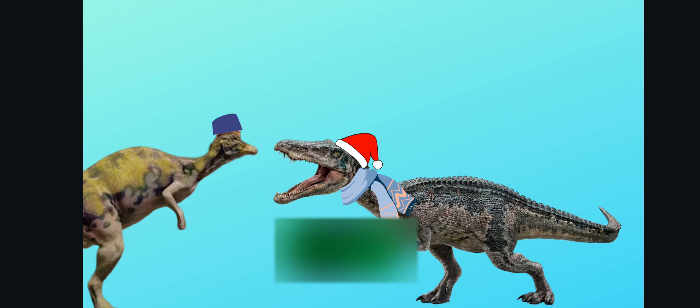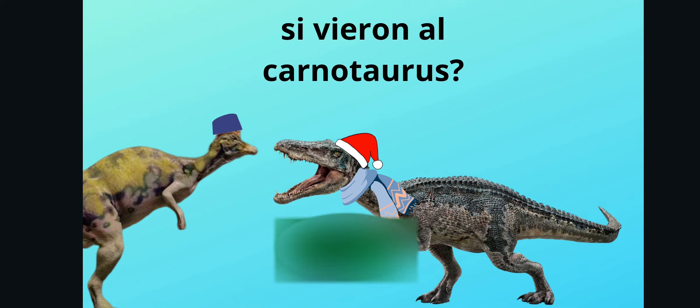Muy bien, señor Corythosaurus. Quiero ocho tacos al pastor, por favor. Y también para mi amigo el Carnotaurus Silvestre Junior, quiero otros treinta tacos al pastor y un menú infantil de tacos, por favor. Muy bien, entonces serán ochocientos treinta. ¿Qué? ¿Qué? Bueno, ya tenga mi tarjeta de crédito.